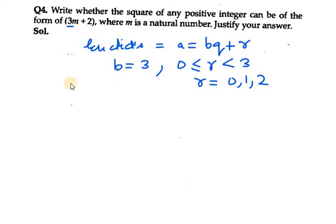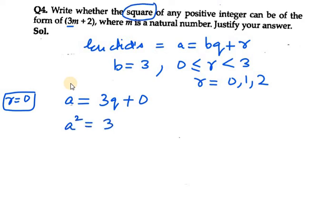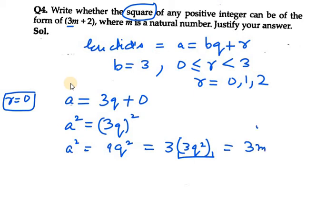It must be between 0 and 3, so 0, 1, and 2, not equal to 3. When r equals 0, a equals 3q plus 0. Now it says square of any positive integer, so a squared equals 3q squared, which can be written as 9q squared. We need it in the form of 3m, so it will be 3 times 3q squared. So m equals 3q squared.